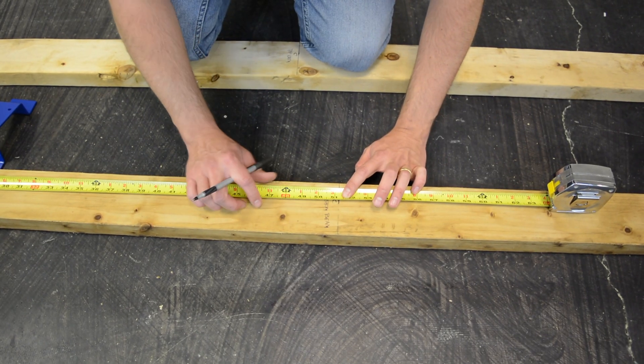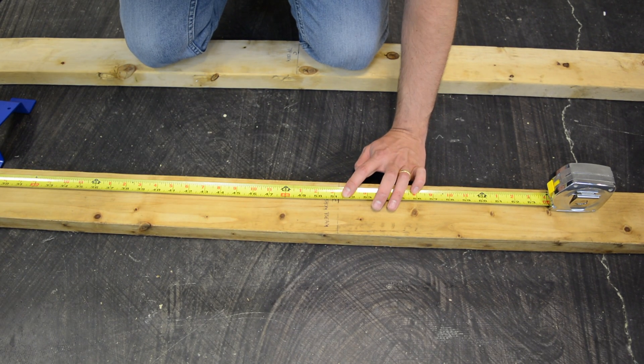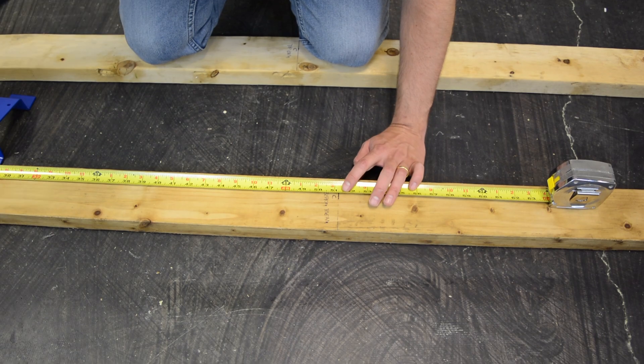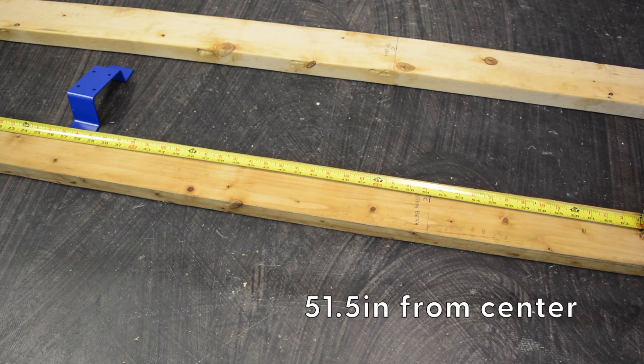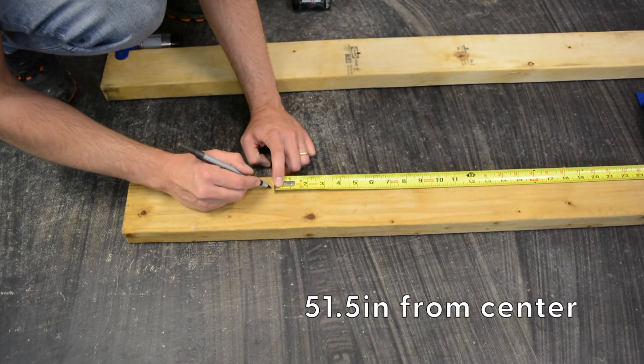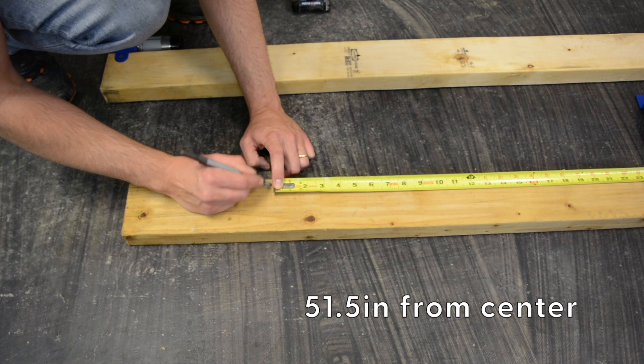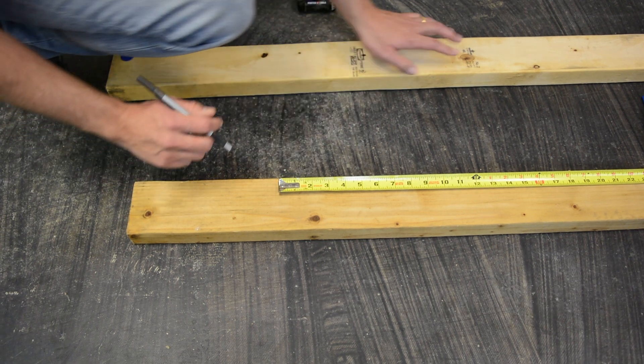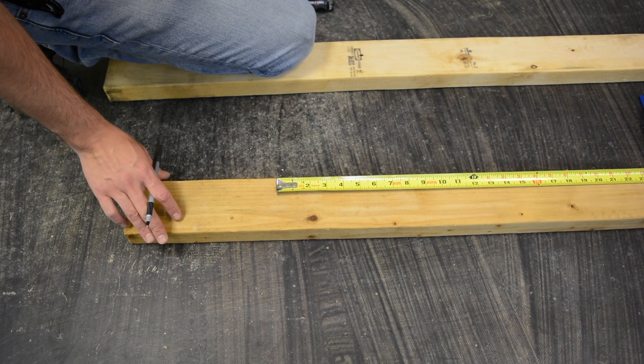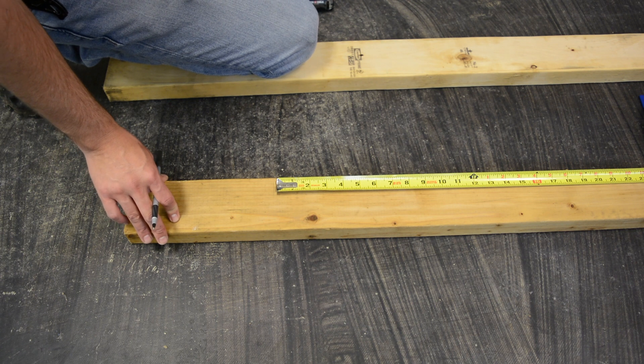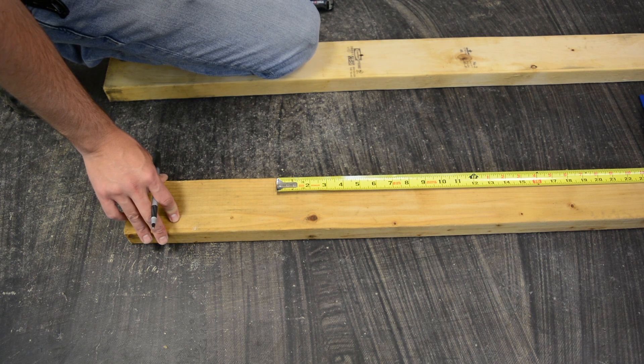The first thing we're going to do is draw four lines for our stud mounts at 51.5 inches out from center on both the top and bottom beam. On the front face of the top beam, which is the one that has the little tongue of the motor mount, we're going to mark out 51.5 inches on each side and then draw a straight line with our speed square. Repeat that on the bottom beam.